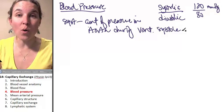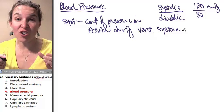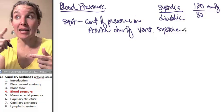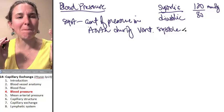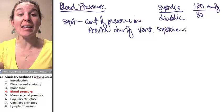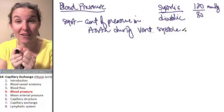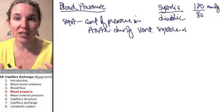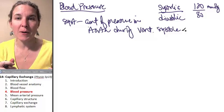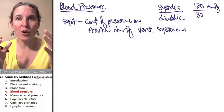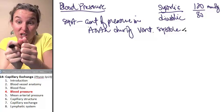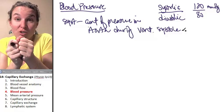Remember, the aorta is the giant artery exiting the left ventricle of the heart and heading to the body. It's the biggest artery in your body. Since it's so close to the left ventricle — the strongest chamber of your heart — it's going to be potentially experiencing a lot of pressure. Systolic pressure is the estimate of the pressure in the aorta during ventricular systole, when the ventricles are contracting.